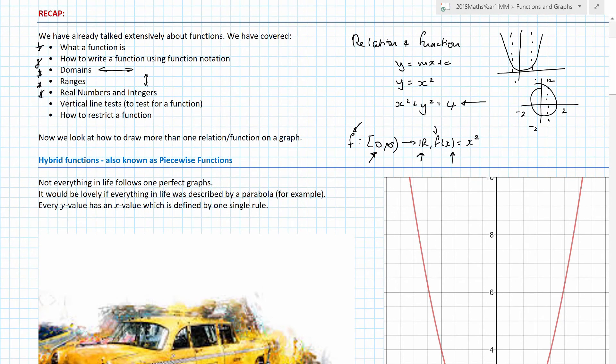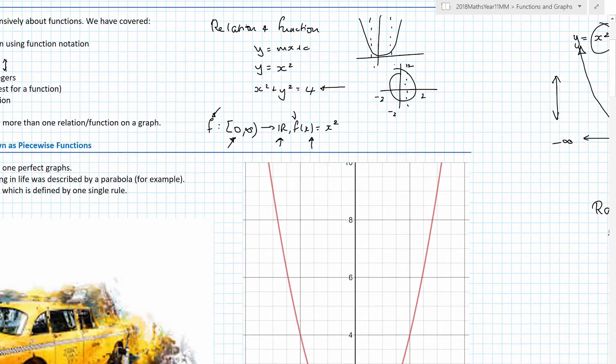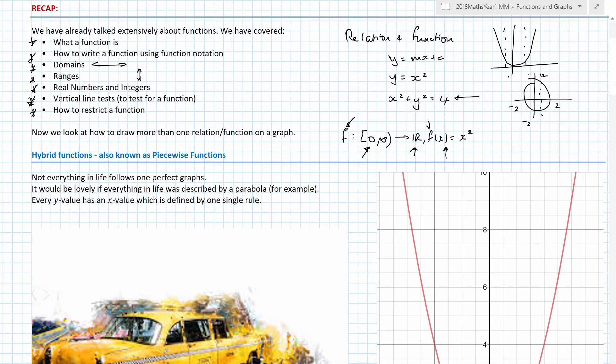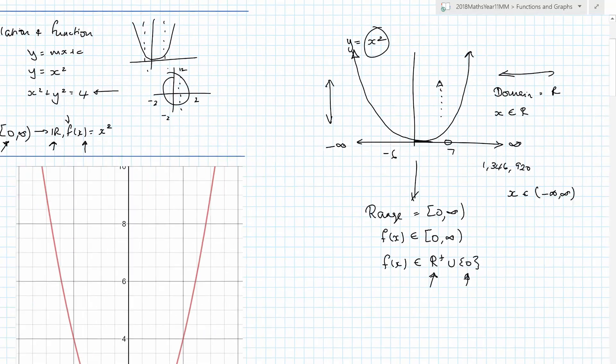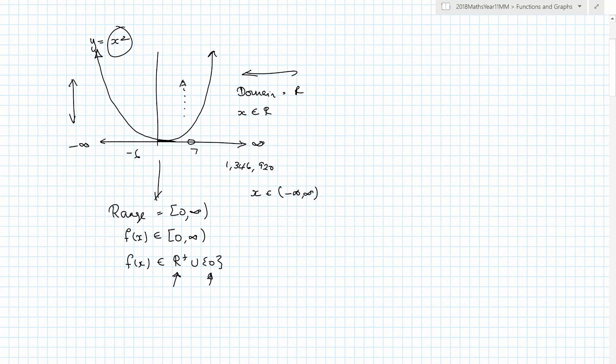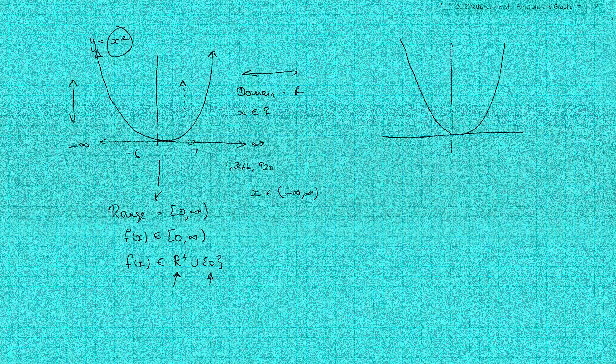This is all work we've done previously. We've looked at real numbers and integers, we've looked at the vertical line test to test for a function, and we've looked at why and how we restrict a function.